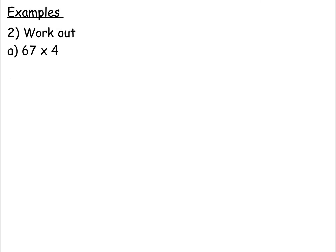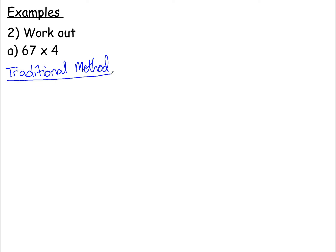And then we have some short multiplication whereby we need to use a method. So let's look at this example — work out 67 times 4. There are three different methods that I'm going to go through to help you answer this question. The first method is called the traditional method.